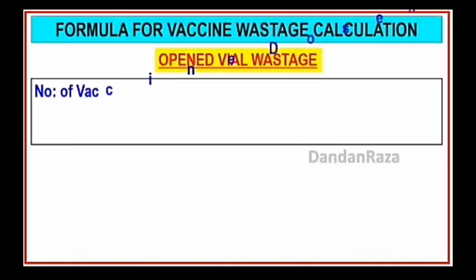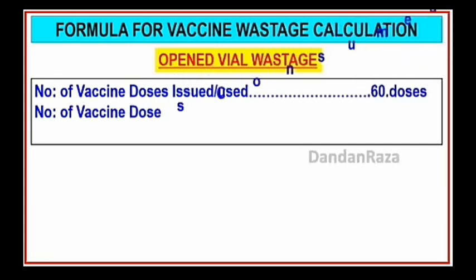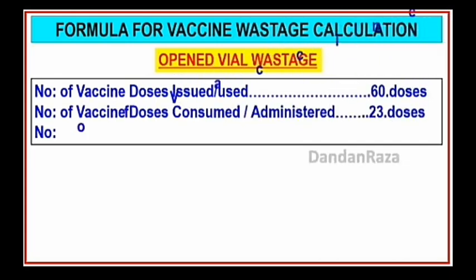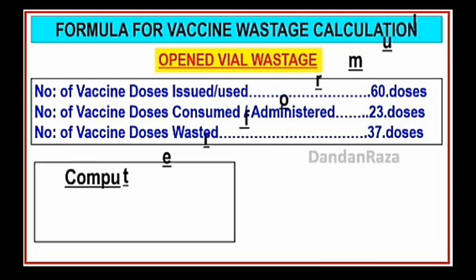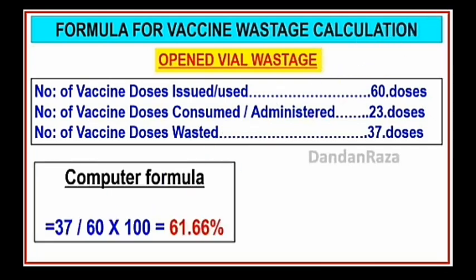Formula for vaccine wastage calculations — open vial wastage. Number of vaccine doses issued or used: 60. Number of vaccine doses consumed or administered: 23. In MS Excel the formula is: 37 divided by 60, multiplied by 100, equals 61.66.